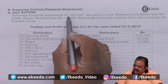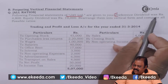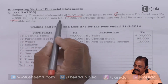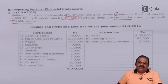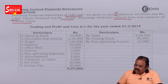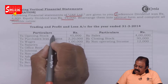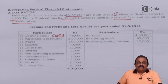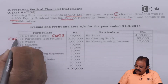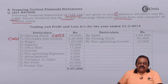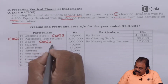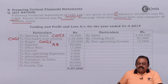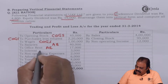Following financial statements of Jay Limited are given. Preference dividend was 4800, equity dividend was 19,000. We need to rearrange them into vertical form and compute all possible ratios. Items include opening stock, purchases less returns — part of cost of goods sold — wages, salaries, fees, administration expenses, office rent, and interest as a finance expense.